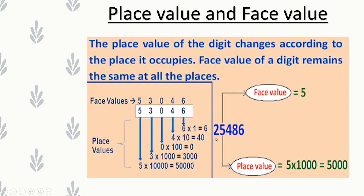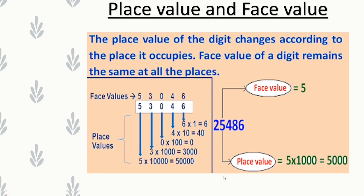Here we are given another number, 25,486. The face value of 5 is 5 itself, whereas the place value of 5 — since 5 is in the thousands place — is 5 into 1000, which is equal to 5000.